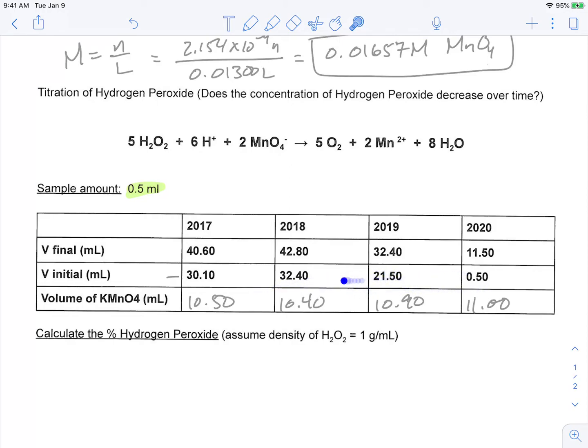Maybe a little bit. Certainly there's a little bit of error here, maybe from 2019 to 2018 and so on. These are almost the same. And so yeah, we could say sort of visually, just from these volumes, that our concentration may have gone down a little bit, but let's go ahead and calculate the percent hydrogen peroxide.